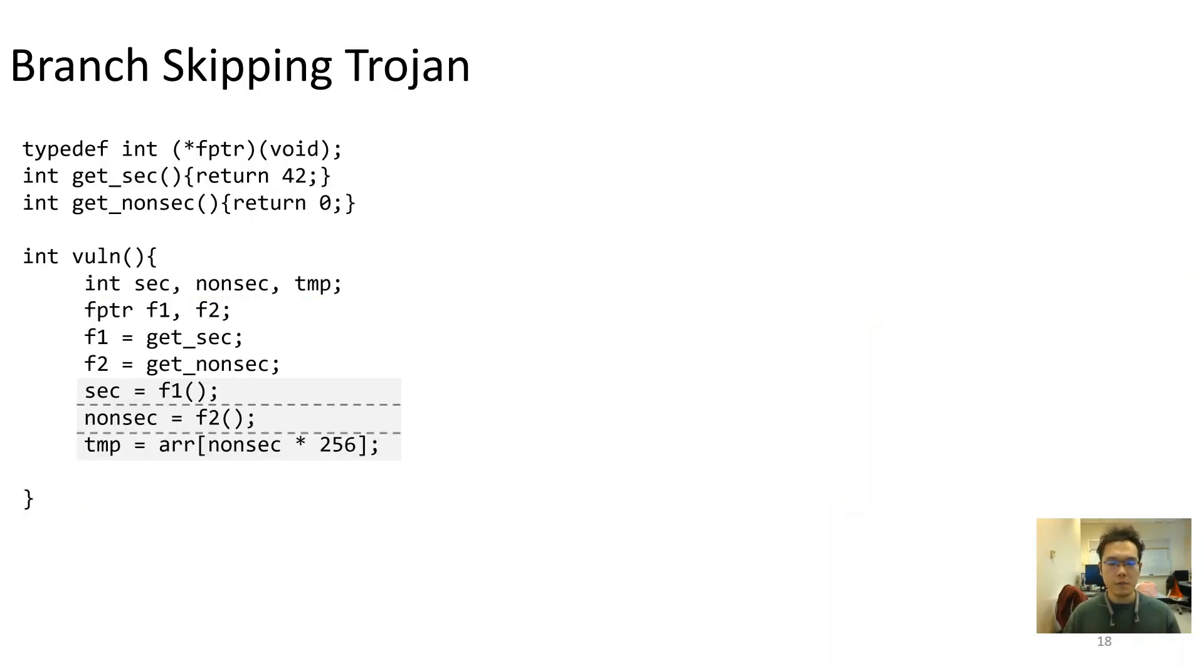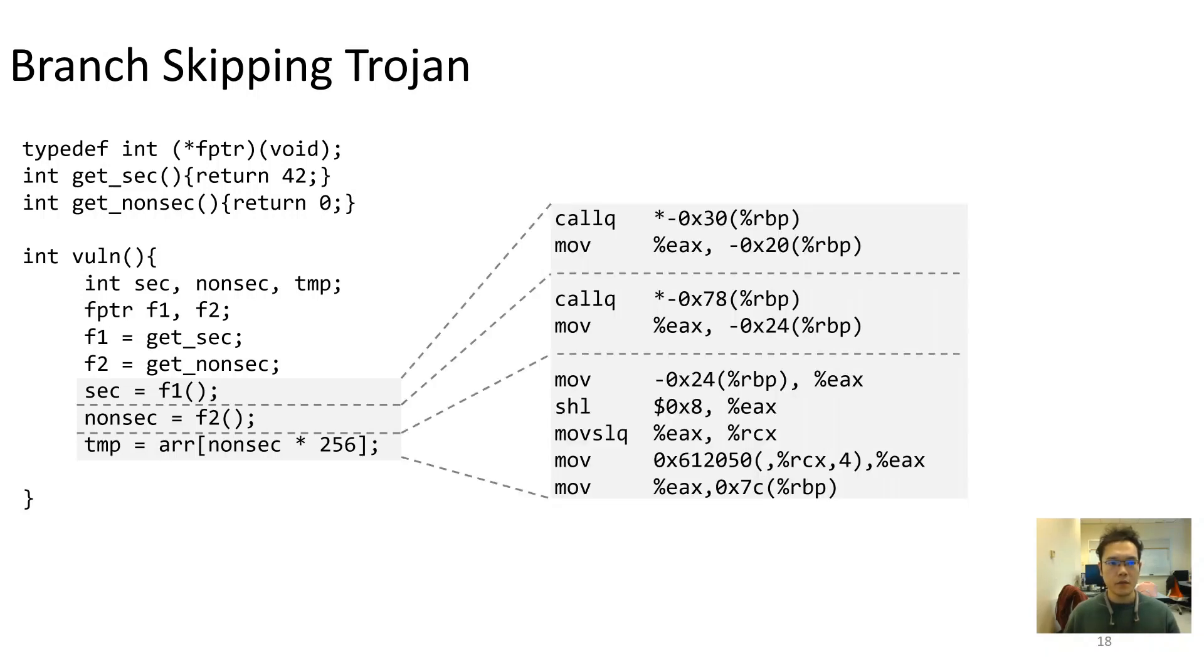To demonstrate a skipping-based trojan, we'll show a code example compiled with LLVM. In this example, there are two indirect calls with two function pointers, F1 and F2. The first function returns a secret value, while the second returns a non-secret. After these two function calls, a gadget code sequence reveals the value of non-secret, which is safe. On the right is the assembly of some key elements.